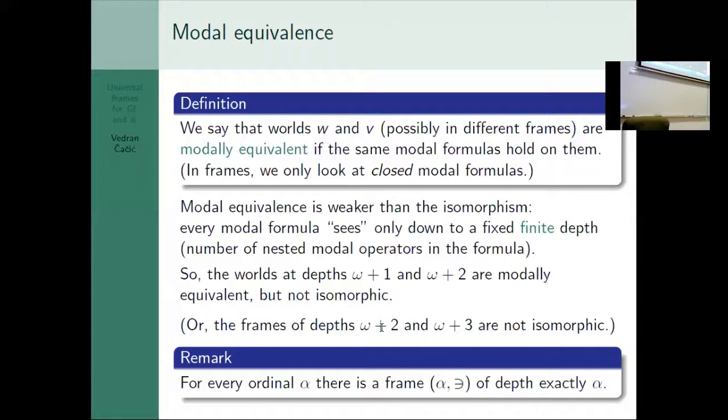If you want to formulate it in terms of frames, frames of depth omega plus 2 and omega plus 3 are not isomorphic. For every ordinal there is a frame of that exactly alpha. It is just the von Neumann ordinal alpha with inverse containment as a relation, easily seen to satisfy the requirements for GL frame.